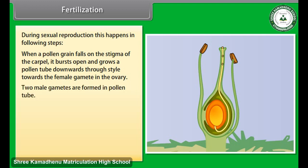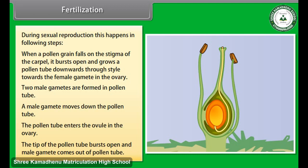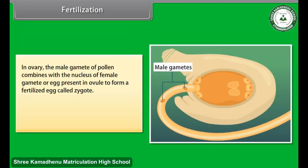Two male gametes are formed in the pollen tube. A male gamete moves down the pollen tube, which enters the ovule in the ovary. The tip of the pollen tube bursts open and the male gamete comes out. In the ovary, the male gamete of the pollen combines with the nucleus of the female gamete, or egg, present in the ovule to form a fertilized egg called a zygote.